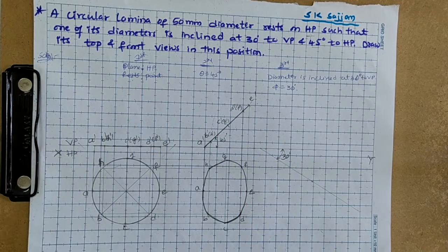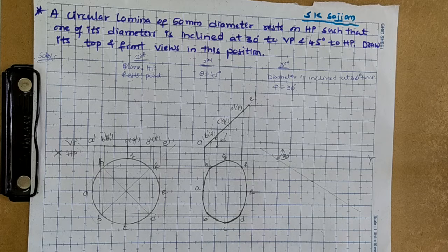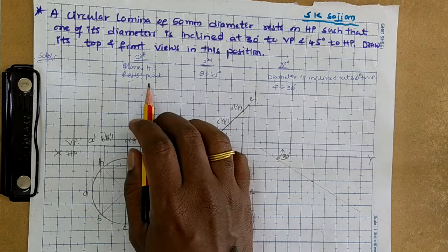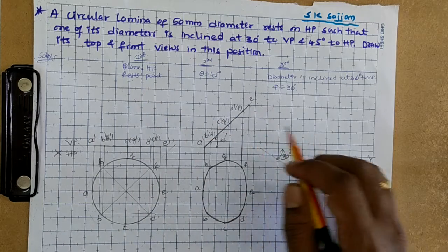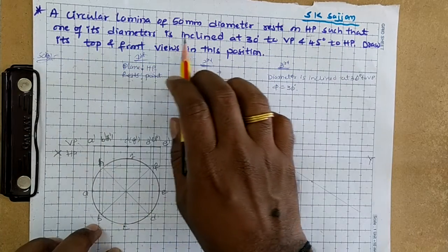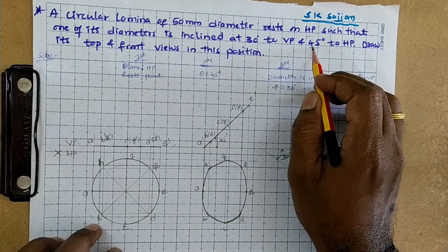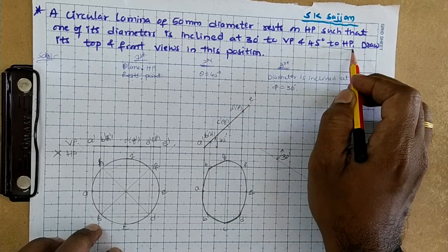There are no edges or corners in a circle, so it usually rests on a point of the circumference — rest on point. For the second position, one of its diameters is inclined at 30 degrees to VP and 45 degrees to HP. This detail is for the second position; theta is given as 45 degrees.